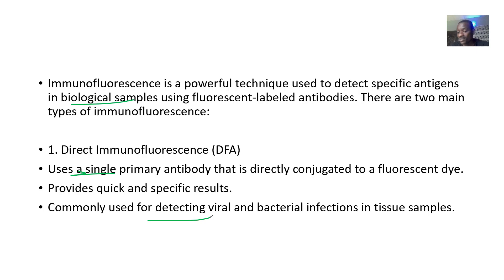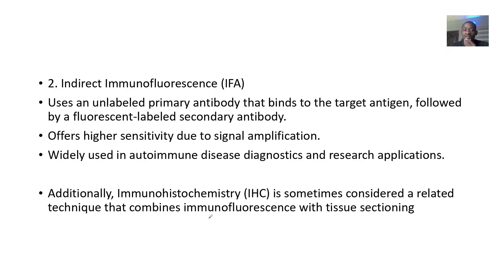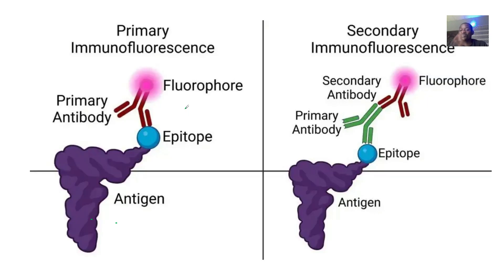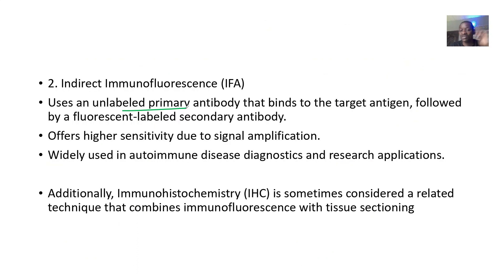The indirect or secondary immunofluorescence uses an unlabeled primary antibody that binds to the target antigen, followed by a fluorescent labeled secondary antibody — essentially attaching an antibody to another antibody before binding to the target antigen. It offers high sensitivity due to signal amplification, increasing the detected signal.